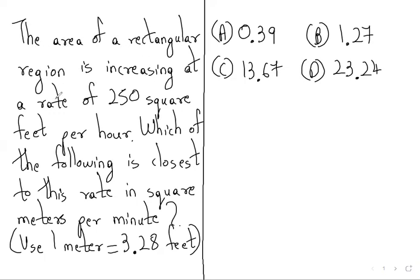The area of a rectangular region is increasing at a rate of 250 square feet per hour. Which of the following is closest to this rate in square meters per minute? Use 1 meter equals 3.28 feet.